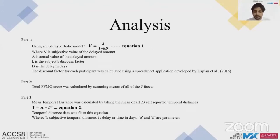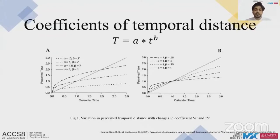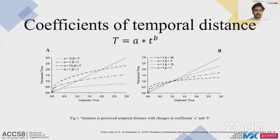Temporal distance responses were modeled using the equation: T = a × t^b, where capital T is subjective temporal distance, small t is the objective delay in days, and a and b are two parameters. Parameter a captures the overall level of time contraction, while parameter b captures the degree of non-linearity or diminishing sensitivity toward time. Kim and Jobberman found that a was positively correlated with discount factor k, while b was negatively correlated with k.